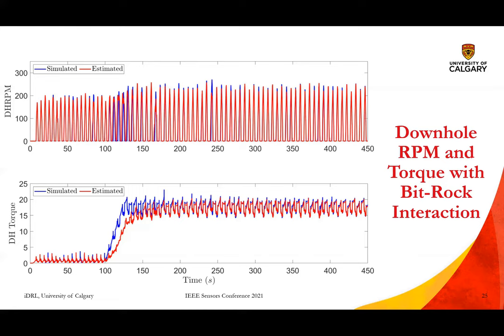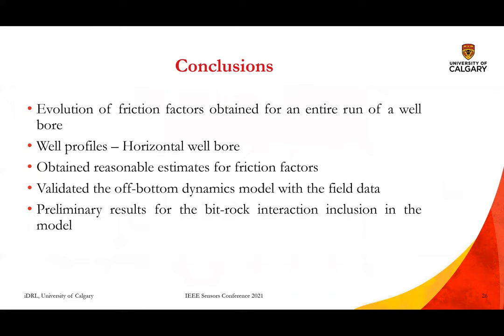The next step is to use actual surface torque and surface RPM as recorded in the field, combined with the actual ROP and well profile, to see how well the model behaves — that is the ideal extension being considered. With the simulated data, we are able to estimate downhole torque and downhole RPM very closely. To conclude: we obtained friction factors for a horizontal wellbore for an entire run; we obtained reasonable estimates; we validated the uphole dynamics model with field data; and we presented preliminary results for bit-rock interaction inclusion in the model. Thank you.